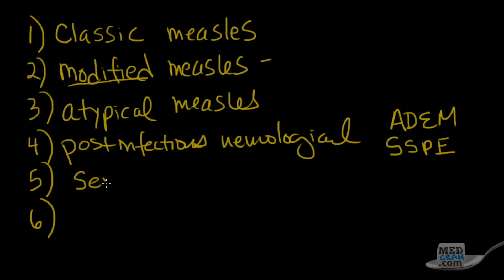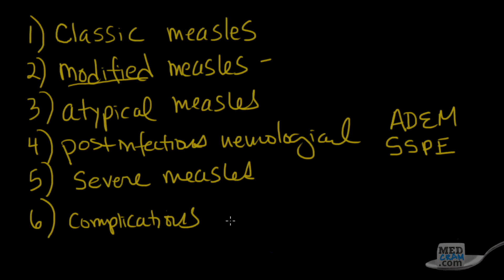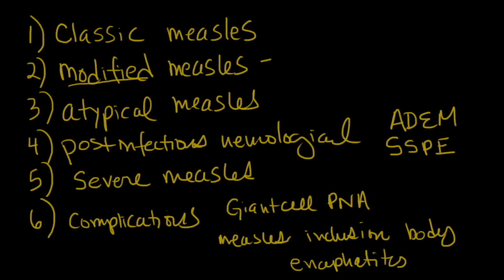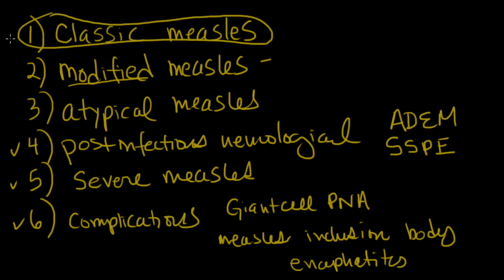Other syndromes include severe measles, and further complications such as giant cell pneumonia and measles inclusion body encephalitis. These last few — severe measles, giant cell pneumonia, and inclusion body encephalitis — are complications we'll touch on briefly later, but the one I want to focus on is the most common, which is classic measles, and how to identify it in patients you see in the clinic or emergency room.